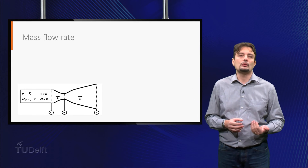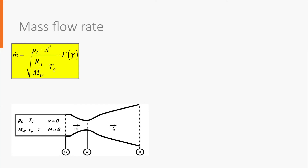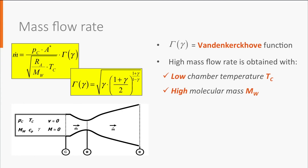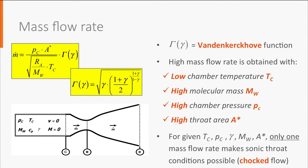Let's now take a closer look at the mass flow rate. Here is the equation for this flow parameter, where the role is played by the Vandenkerckhove function of the specific heat ratio. We know that a high mass flow rate is beneficial to achieve a high thrust level. This result can be obtained with a low combustion chamber temperature or a high molecular mass — note that this is exactly opposite to what you need to achieve high jet velocity. High mass flow rate can also be obtained with high chamber pressure, or with a high nozzle throat area. For an effective convergent-divergent nozzle, the flow needs to be sonic at the throat. With a given throat area and given chamber conditions, a sonic throat is made possible by only one specific value of the mass flow rate given by this equation. The flow is therefore controlled by the nozzle — it is choked.